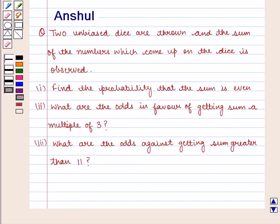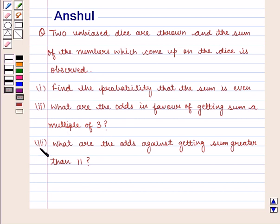Hello and welcome to the session. In this session we are going to discuss the following question: 2 unbiased dice are thrown and the sum of the numbers which come upon the dice is observed. Find the probability that the sum is even. What are the odds in favor of getting a sum that is a multiple of 3? What are the odds against getting a sum greater than 11?